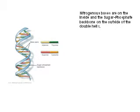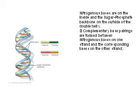Nitrogenous bases are on the inside and the sugar-phosphate backbone is on the outside of the double helix. Complementary base pairings are formed between nitrogenous bases on the inside of one strand and the corresponding nitrogenous bases on the other strand.